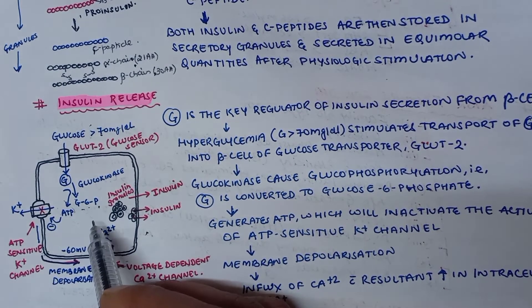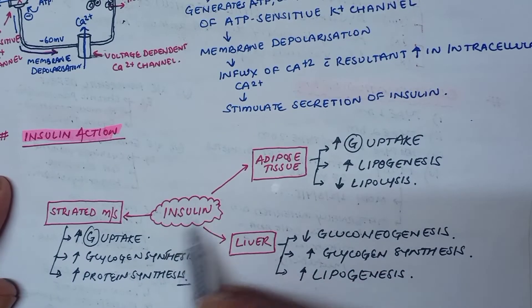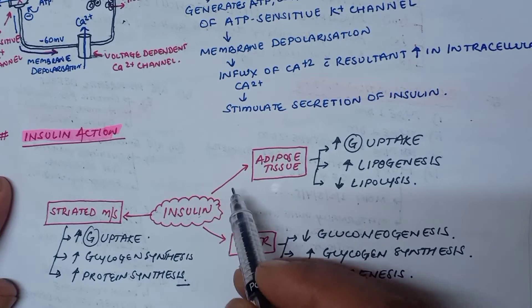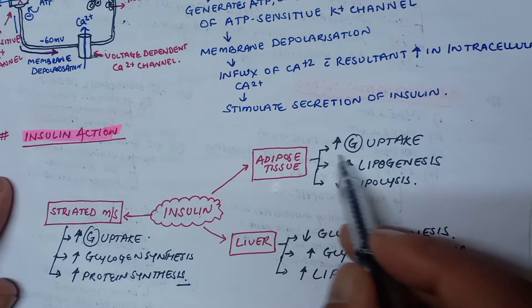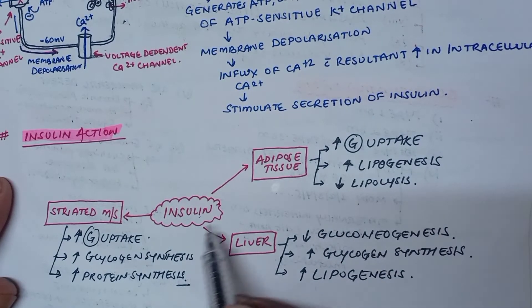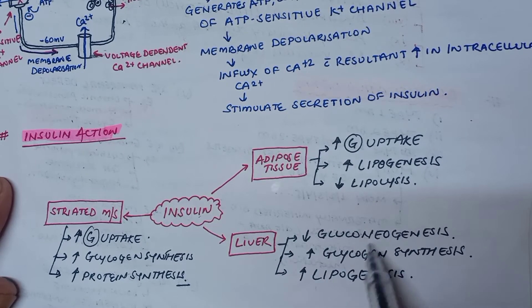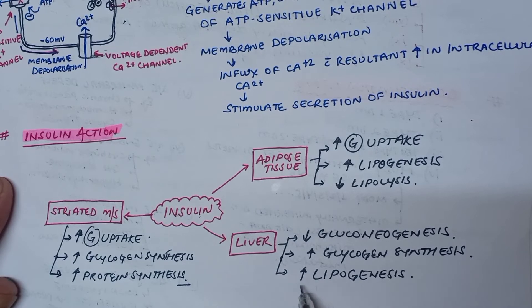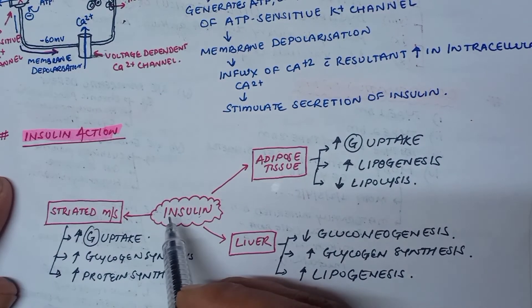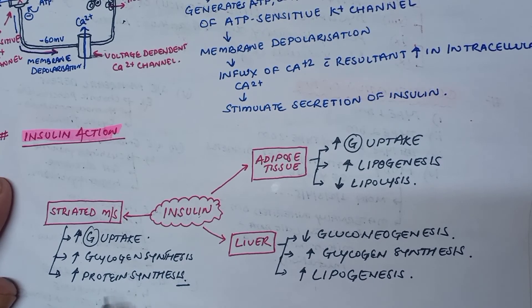Insulin stimulates adipose tissue, causing increased glucose uptake, increased lipogenesis, and decreased lipolysis. It stimulates the liver for decreased gluconeogenesis, increased glycogen synthesis, and increased lipogenesis. Similarly, insulin stimulates muscles, causing increased glucose uptake, increased glycogen synthesis, and increased protein synthesis.